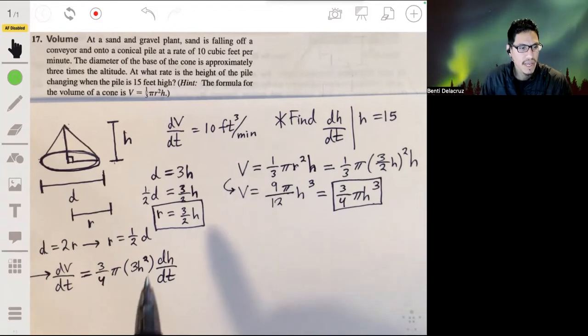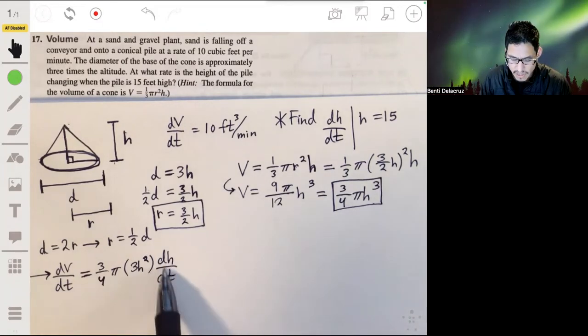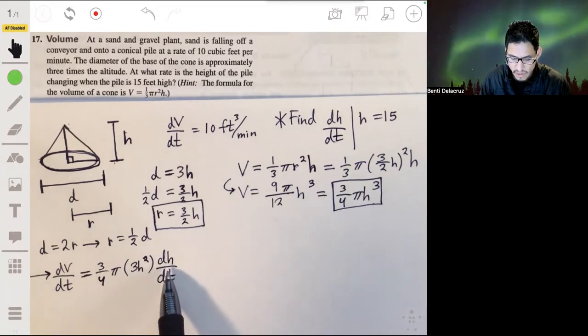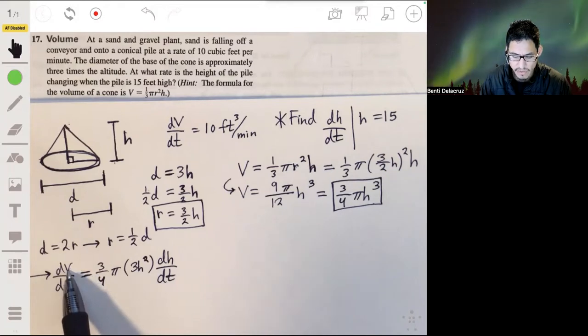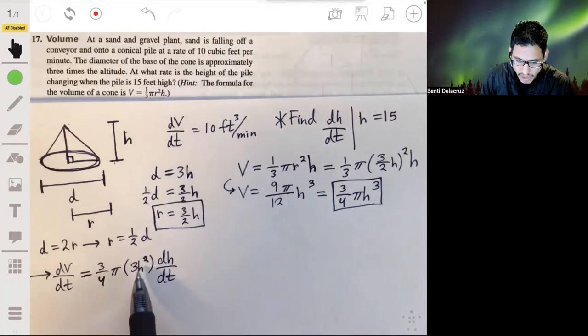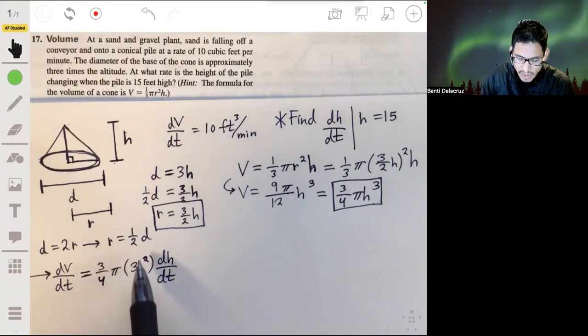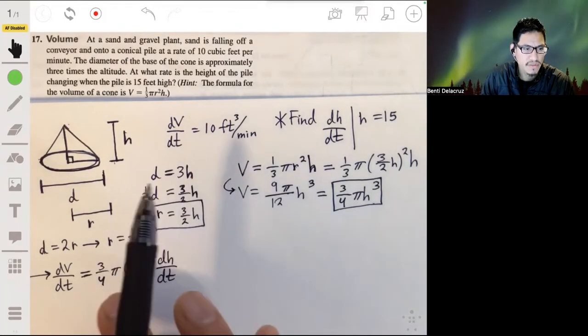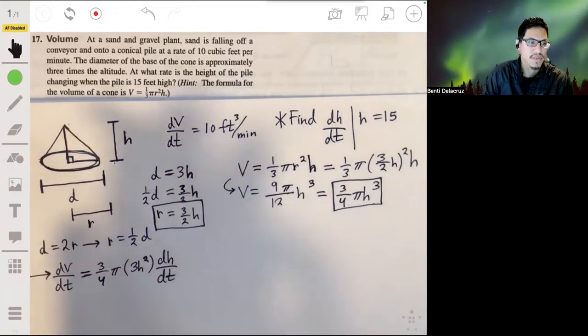See, now we have dh/dt in our equation. We already have the value of dV/dt, we're told that it's 10, and then all we need to find is the value of h, and then we can actually just solve this equation for dh/dt because it will just be an algebra problem.